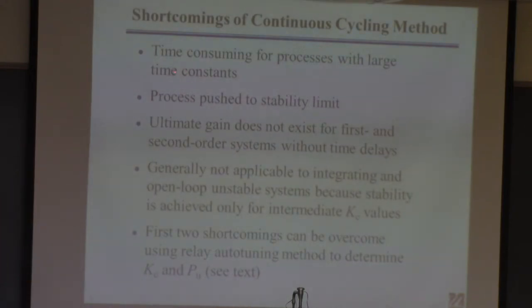So what's shortcomings of this method? If you're actually going to implement this in a plant, you might imagine this is going to be not easy to do if the system takes a long time to reach steady state. Each time you keep increasing the gain, you've got to wait twelve hours to see if it's a sustained oscillation or something. You could spend weeks trying to do this on the distillation column downstairs. Process is pushed to the limit of stability, which will make people very unhappy if you're in a plant that's actually making a product. You'll be disappointed to know an ultimate gain sometimes doesn't even exist. So if it's a first order or second order system without a time delay, there is no ultimate gain.